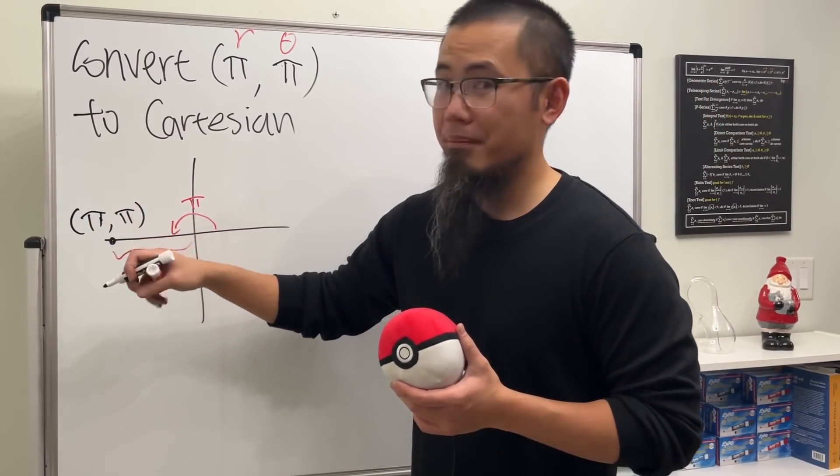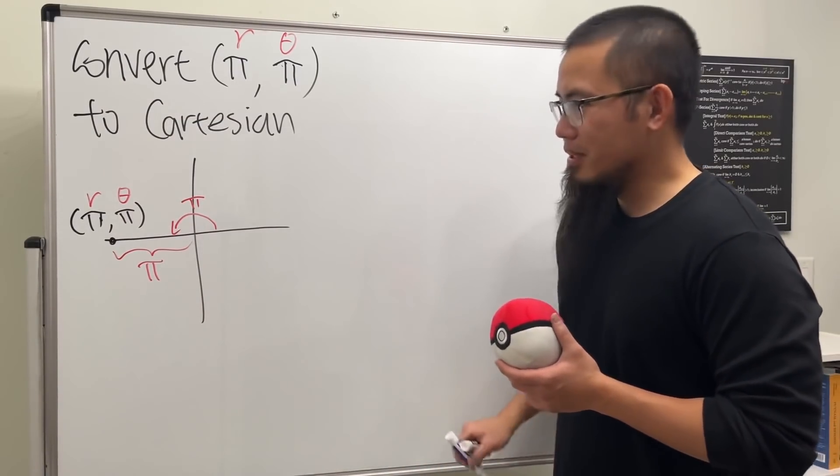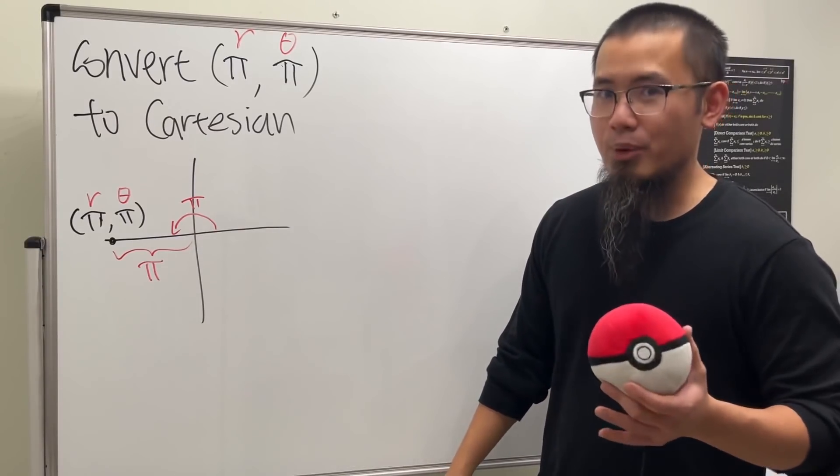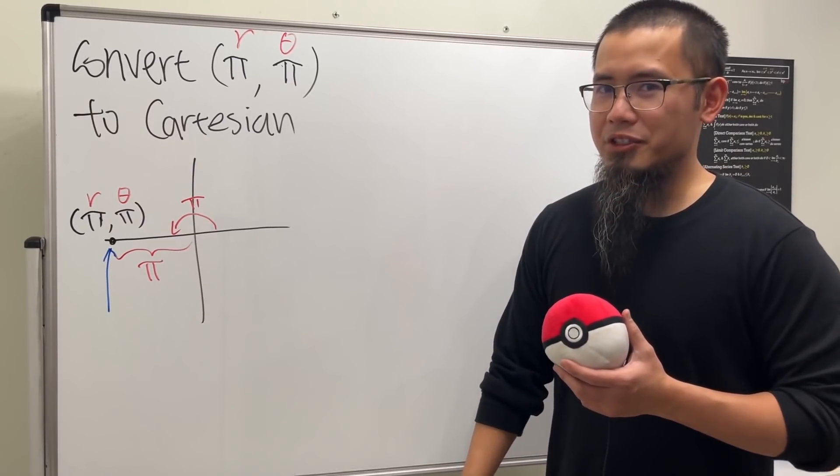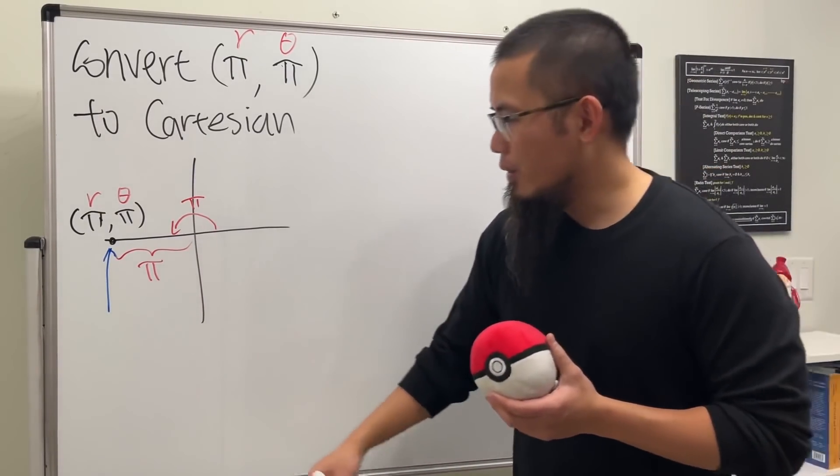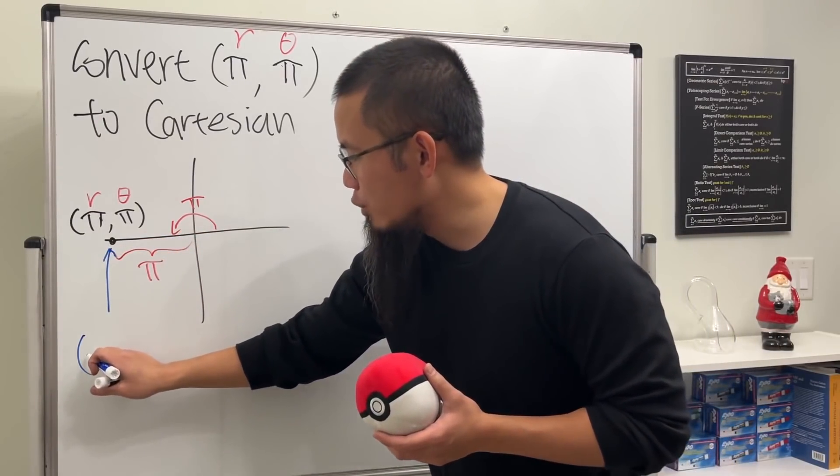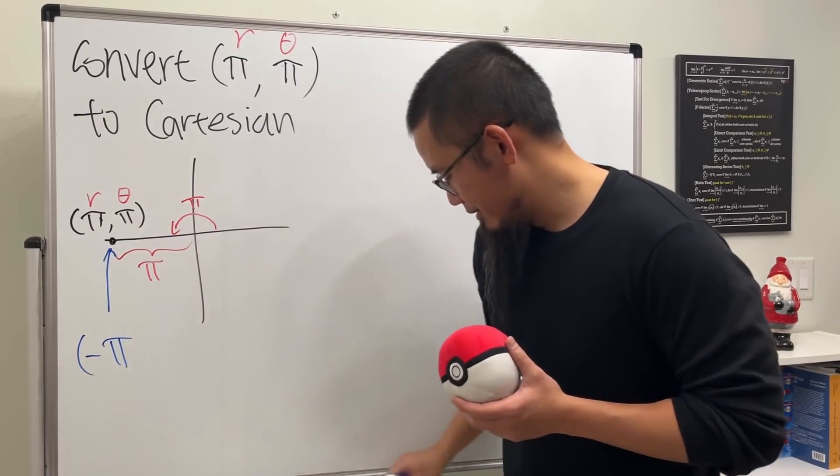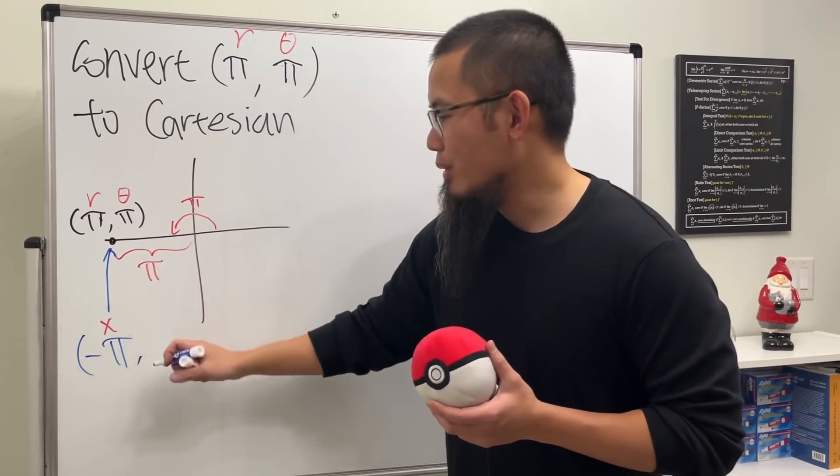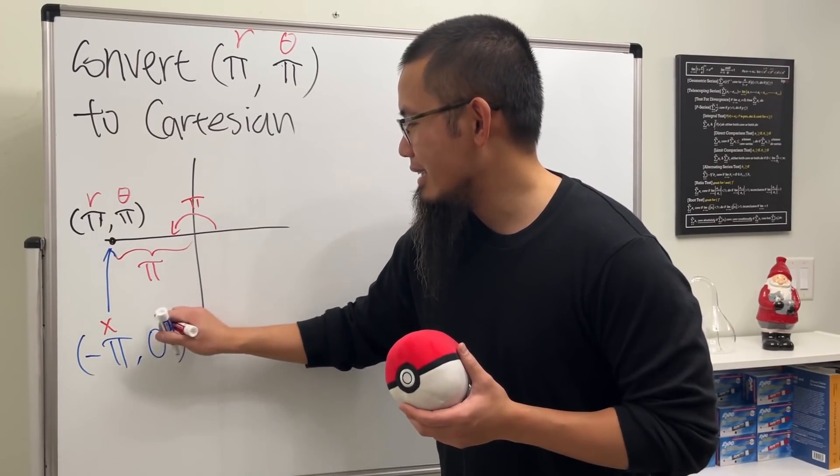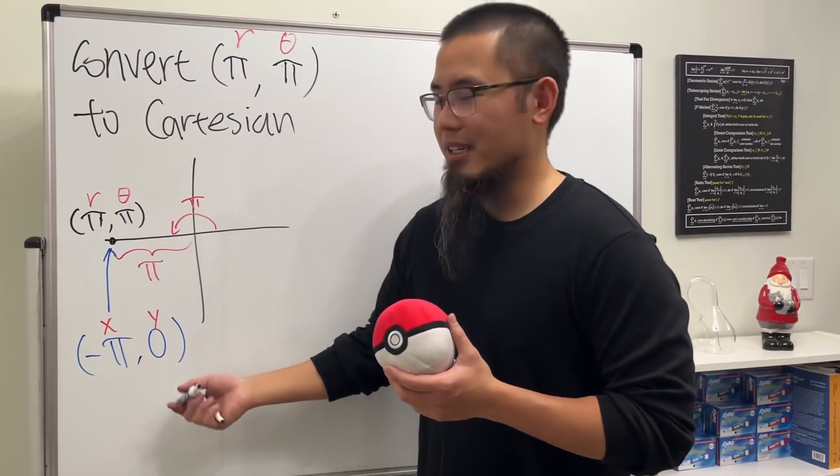So that's where the point is, and this is (π, π), but let's indicate that this is a polar coordinate because it's extremely confusing. Now how can we get the Cartesian, meaning the x and y? Well, that's just the usual case. We went to the left π units, so it will become negative π for the x value. This is just the x value, and we stay on the x-axis, so the y value will just be zero.